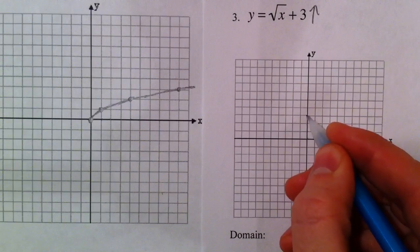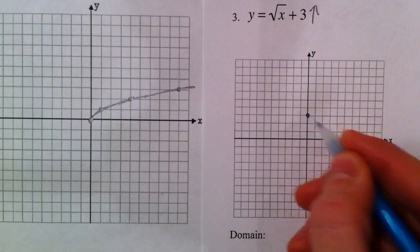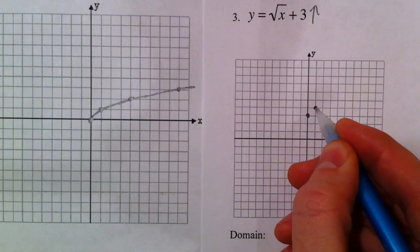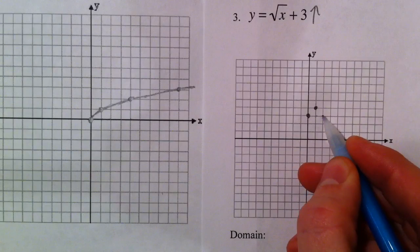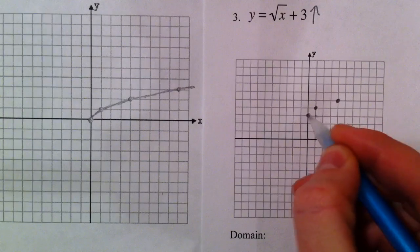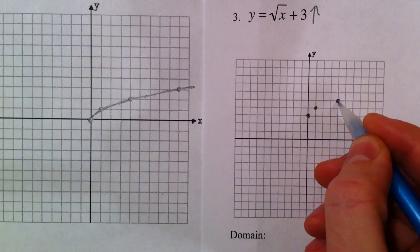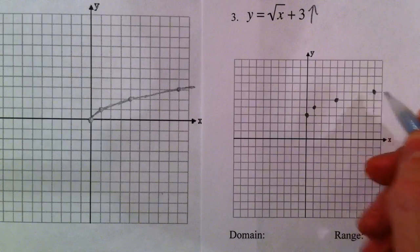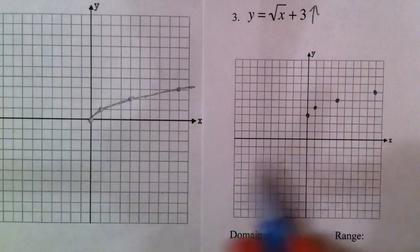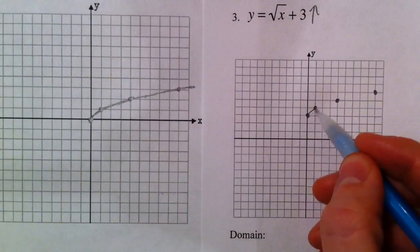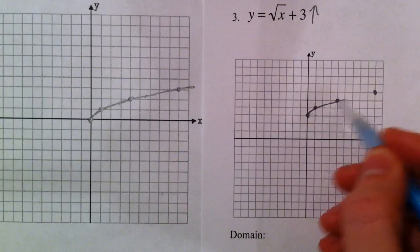We go up three from the origin. Then to the right one and up one, because the square root of one is one. To the right four and up two, because the square root of four is two. And then the square root of nine is three. So it took our whole graph and just added three to every bit of it.